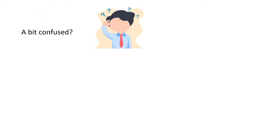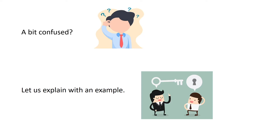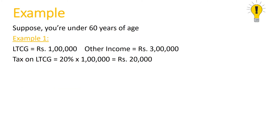Let us explain with an example. Suppose you are under 60 years of age — your exemption limit would be Rs. 2,50,000 — and your total income excluding long-term capital gain is Rs. 3,00,000. Since your total income excluding LTCG is greater than the exemption limit of Rs. 2,50,000, you will have to pay capital gain tax on the full Rs. 1,00,000 at 20%. So your capital gain tax will be Rs. 20,000.